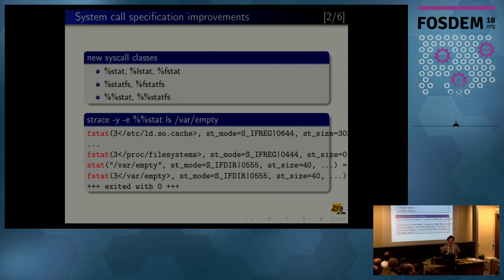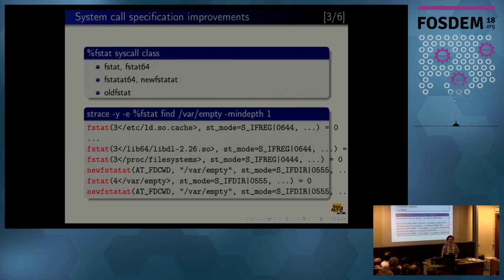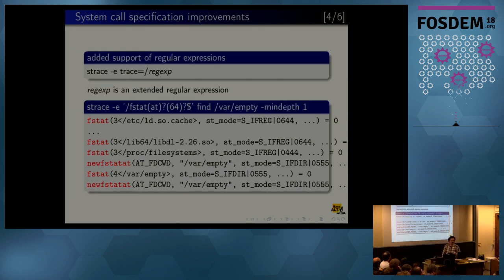You can see in this example how it looks, what does it mean two percents. It's just the way to describe all fstat process family syscalls. Why so many? How many fstat system calls do we have in Linux kernel, do you think? Five. Why five? Well, 64-bit architectures usually have two of them, 32-bits also two but different, and there is also an engine system call that modern architectures don't have. But you don't have to worry about all these details, just use the system call class name, that's all.